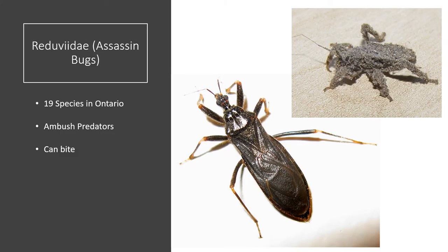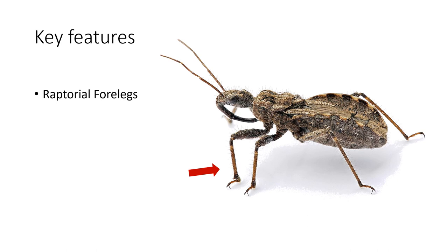Reduviidae, aka assassin bugs. This picture is the masked hunter, which hunts bed bugs. The top photo is the nymph, which camouflages itself with dust and dirt. There are 19 species in Ontario. They are ambush predators and can bite. Key features: they have raptorial forelegs — strong and spiky — used for grabbing and holding prey, similar to a praying mantis. They also cannot hide their mouthparts because they are very thick, which is how assassin bugs eat their prey.